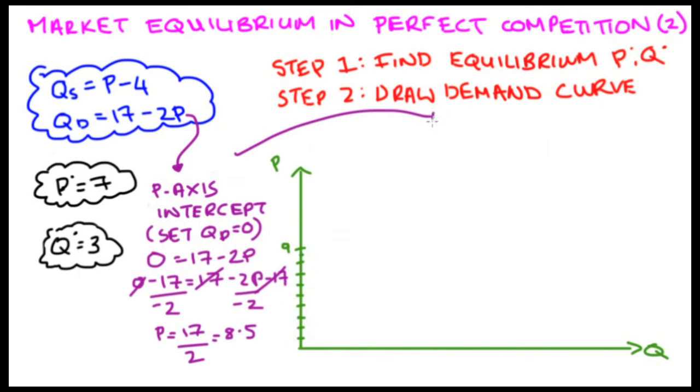The next thing I'm going to do is our quantity axis intercept. If you can imagine the demand curve again, all those different combinations of prices and quantities, you can imagine that when that demand curve hits the quantity axis, that's when our price is equal to 0. So we're going to set P is equal to 0. If I do that, I get Q subscript D is equal to 17 minus 2 times 0, which is just equal to 17. So let me put that on my axis.